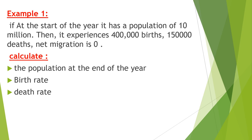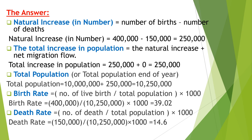We have examples for calculating death and birth rates. In Example 1, if at the start of the year a country has a population of 10,000,000, then experiences 400,000 births and 150,000 deaths, with net migration equal to zero, we calculate the population at the end of the year. The natural increase is the difference between births and deaths: 400,000 minus 150,000 equals 250,000.